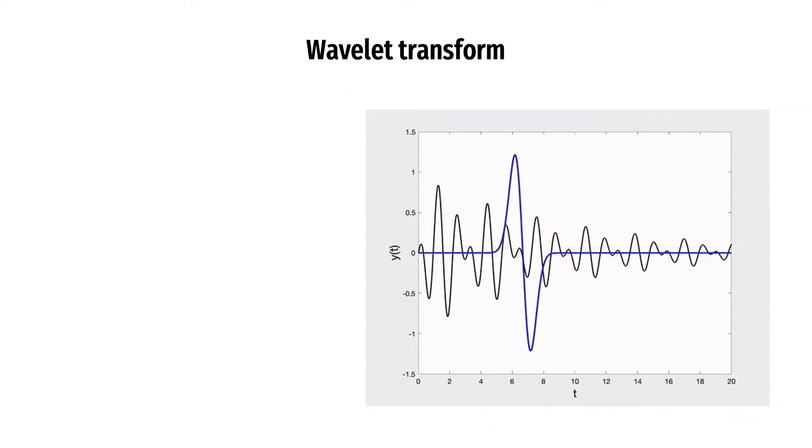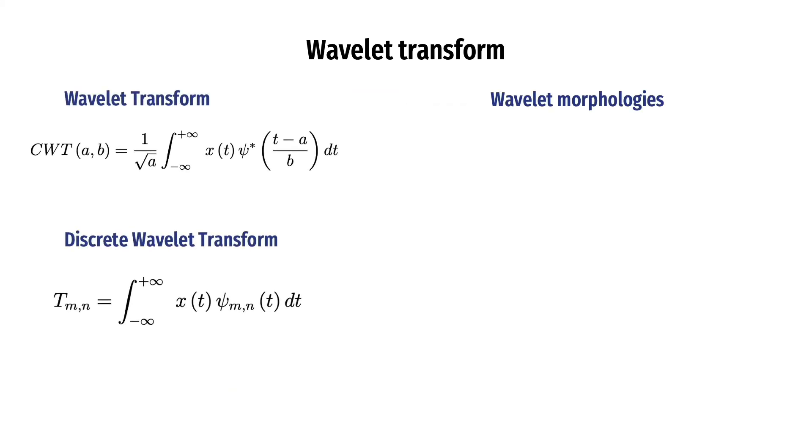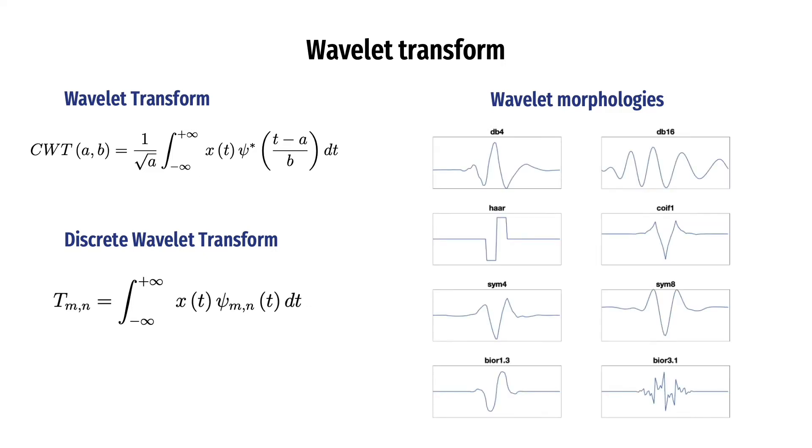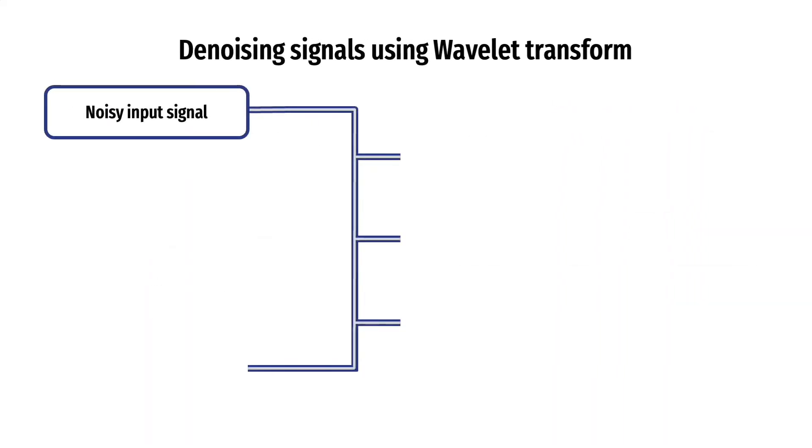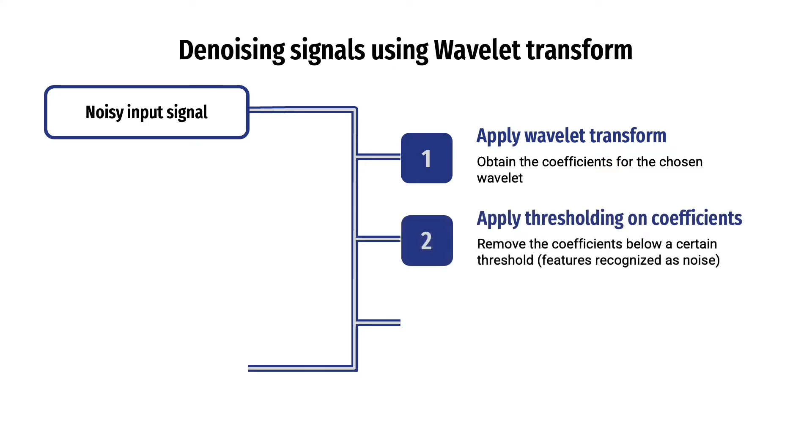The wavelet transform equations are shown here, and the different morphologies available are shown here. In this study, we first apply wavelet transform on the noisy signal, then remove the coefficients below a computed threshold. We then reconstruct the signal based on the chosen coefficients to obtain the denoised output signal.